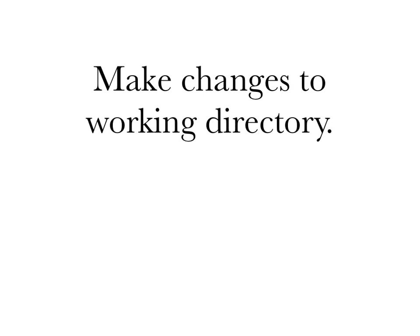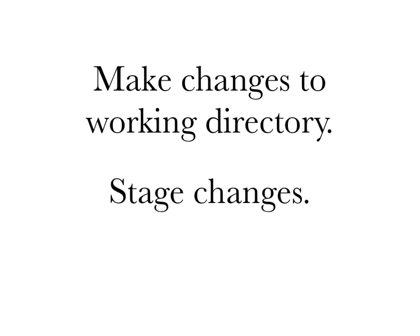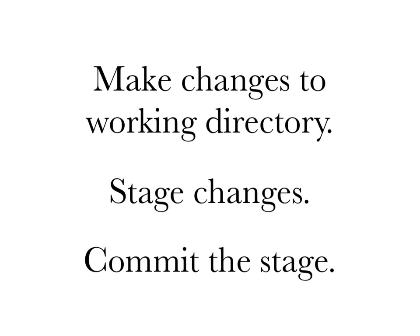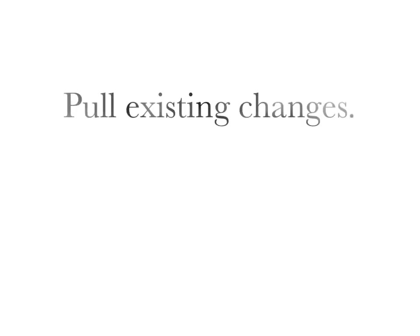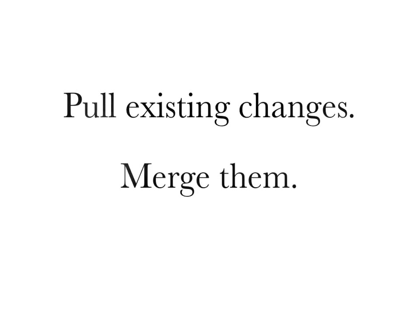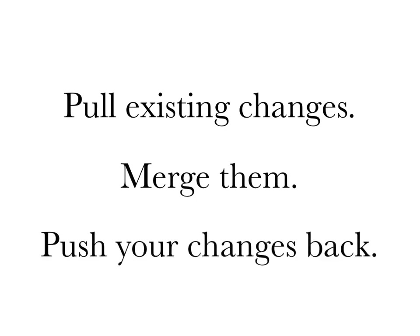The normal workflow for Git has some key steps to remember: make changes to your working directory, stage those changes, and commit the staged changes. It's a little different to Subversion because your entire repo is remote in that case, whereas here you've got something you can mess around with locally. You should feel more freedom to commit, make branches, and roll back because none of it needs to live on the server unless you want it to. On a larger scale, you pull existing changes, merge them with yours, and push changes back.